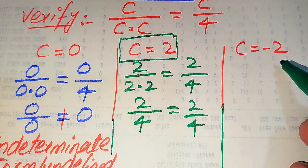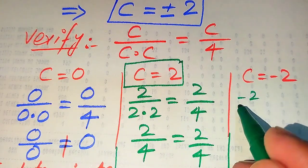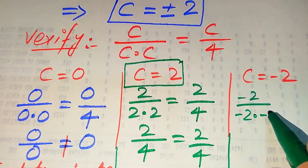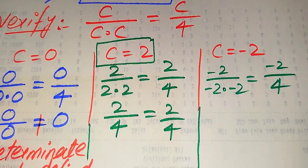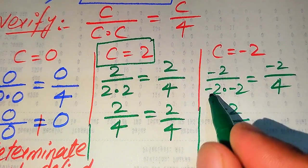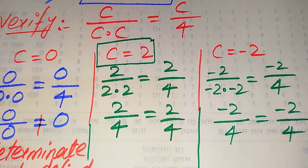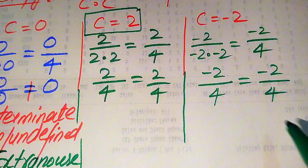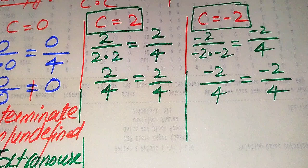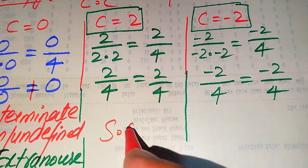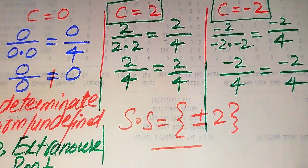Now we check the third value, c equals minus 2. Substituting on both sides gives minus 2 divided by (minus 2 multiplied by minus 2) equals minus 2 divided by 4. Since minus times minus is plus, we get minus 2 divided by 4 equals minus 2 divided by 4. Both sides are equal, so c equals minus 2 also satisfies the given equation.